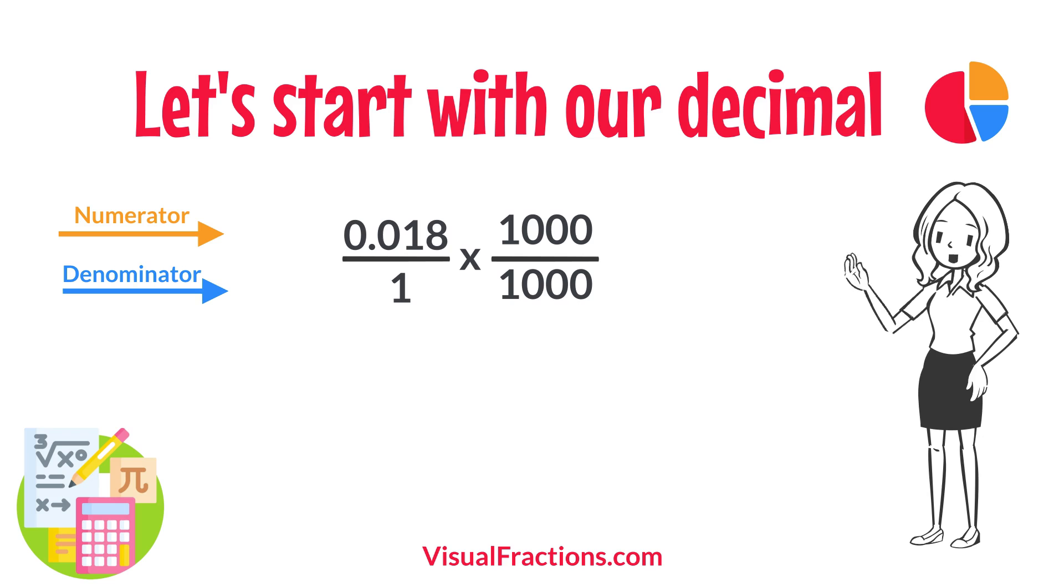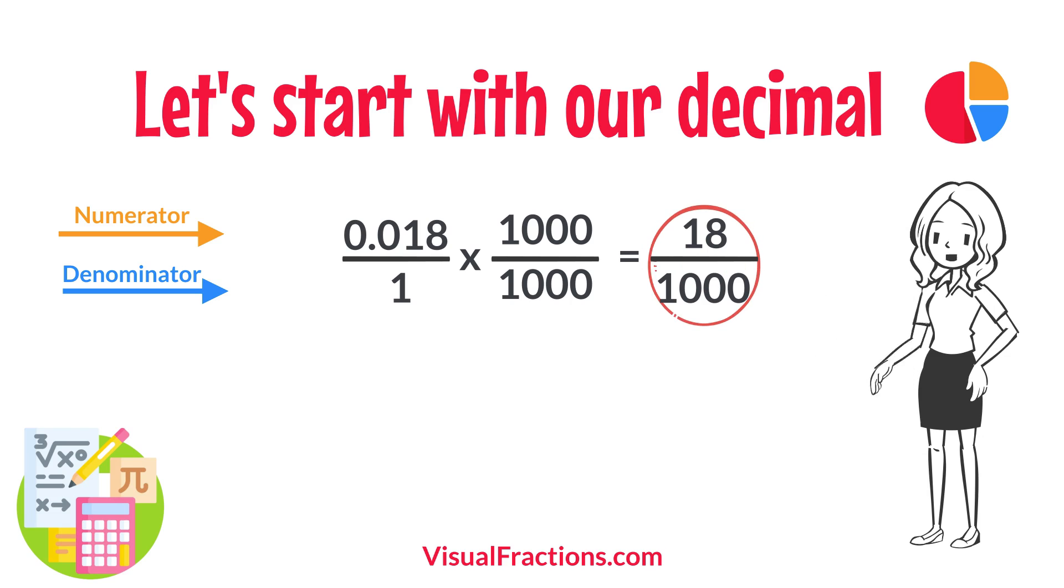So, 0.018 times 1,000 gives us 18, and 1 times 1,000 gives us 1,000. This translates 0.018 to the fraction 18 over 1,000.